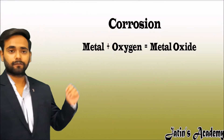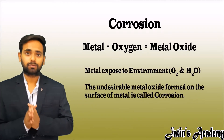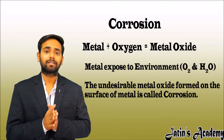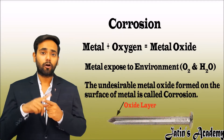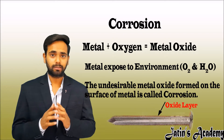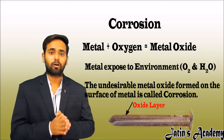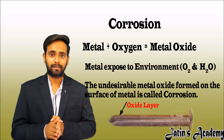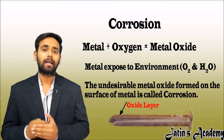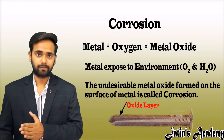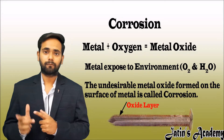Now let's understand what is corrosion. When a metal is exposed to the environment, where there is moisture and oxygen, an oxide layer is formed on the surface of the metal, which is called the metal oxide layer. This layer is actually undesirable to some metals and desirable to some metals. This layer is called corrosion of metal.